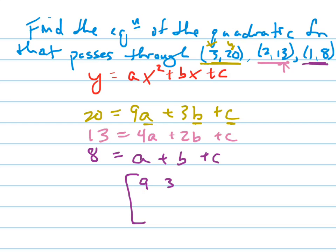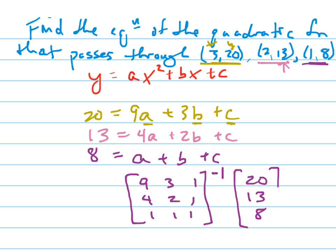The coefficient matrix is 9, 3, 1 on the first row; 4, 2, 1 on the second row; and 1, 1, 1 on the third row. I'll take the inverse of that matrix and multiply it by my resultant matrix, which is 20, 13, and 8.